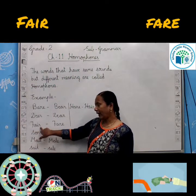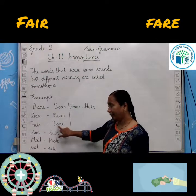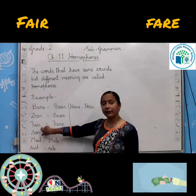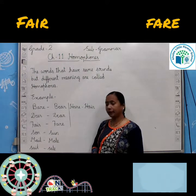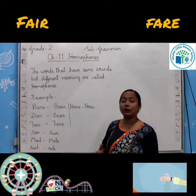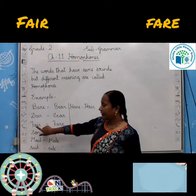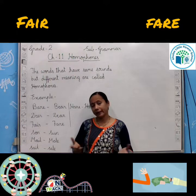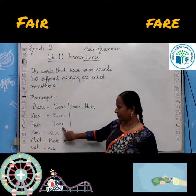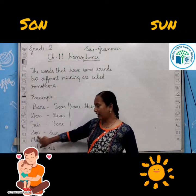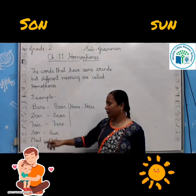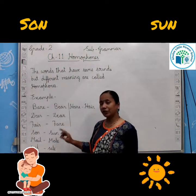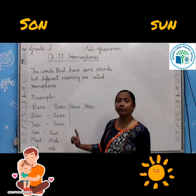Next example: S-O-N — 'son' means beta, and S-U-N — 'sun' means suraj. Both are pronounced 'sun' but spelling is different and meaning is also different. Next example: M-A-I-L — 'mail', and M-A-L-E — also 'mail'. M-A-I-L is a message — like email, Gmail — computer ya wireless dwara pohunchne wale messages ko mail kehte hain. And M-A-L-E is a gender — all boys, papa, uncle, grandfather — they are all male.